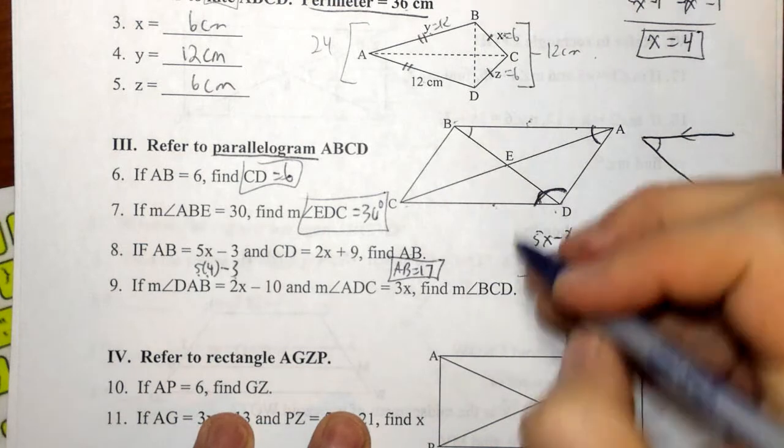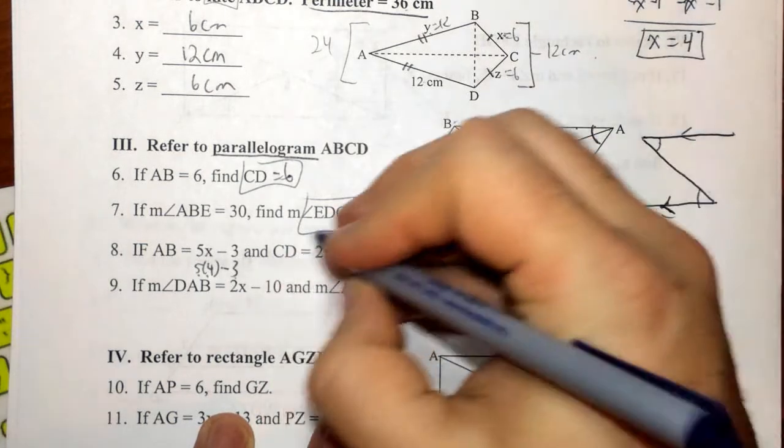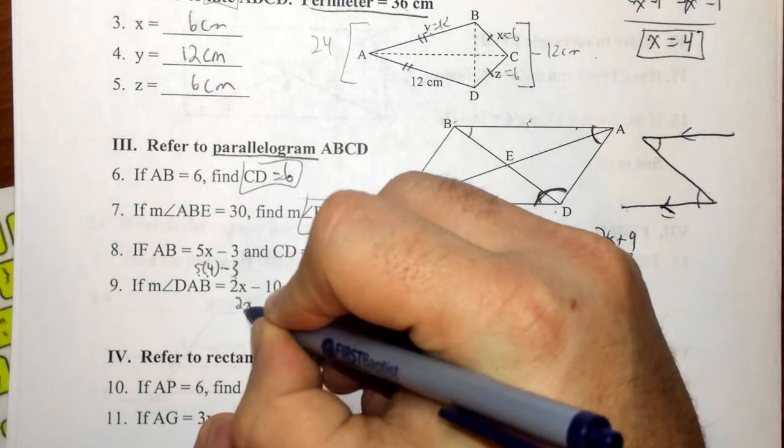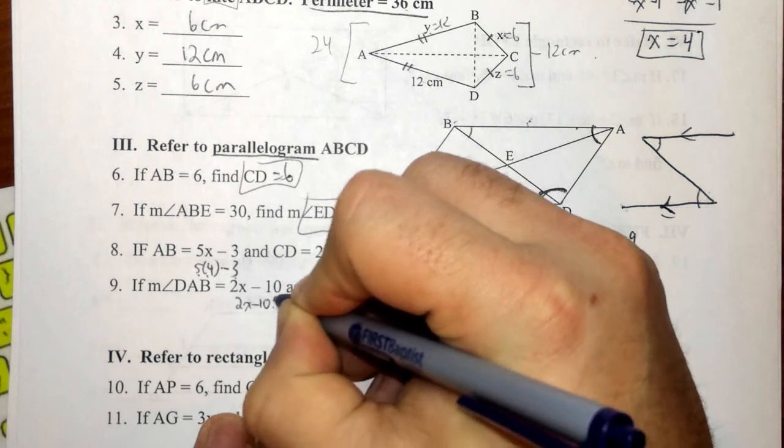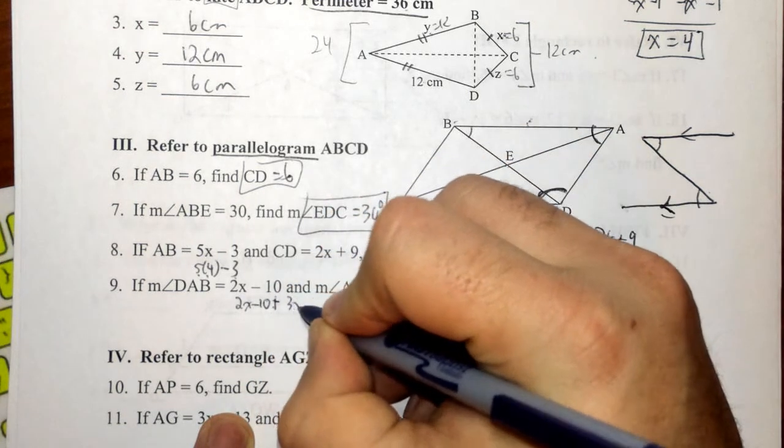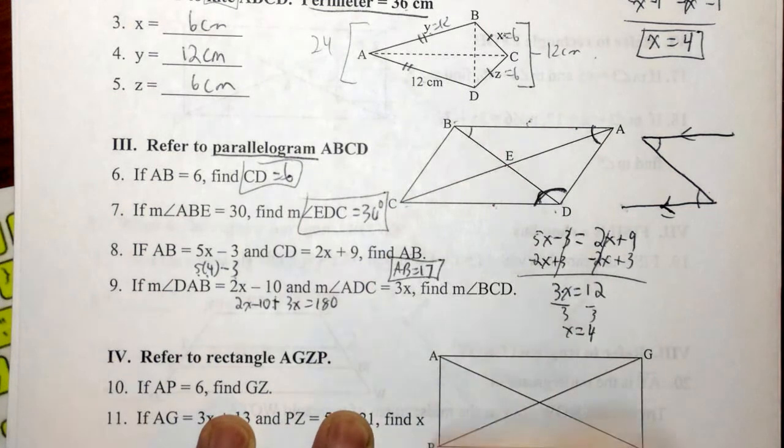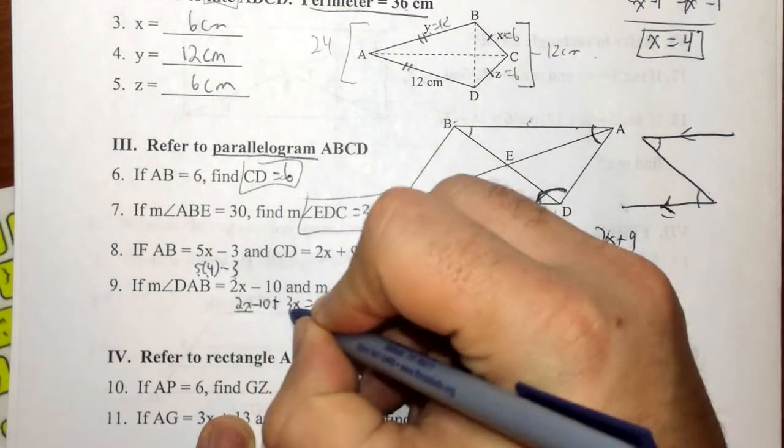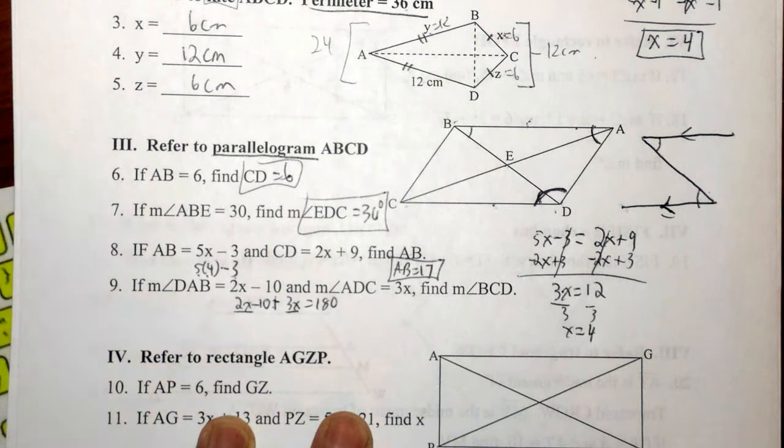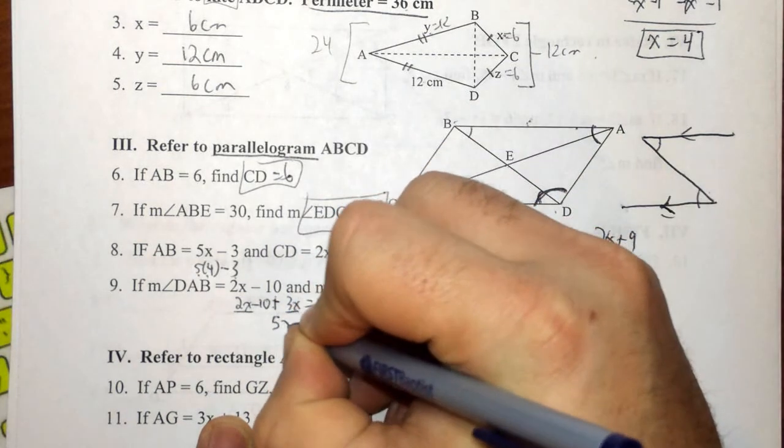So let's go ahead and add those up and set them equal to 180. So 2x minus 10 plus 3x is equal to 180. Now let's collect our like terms. 2x and 3x is 5x.